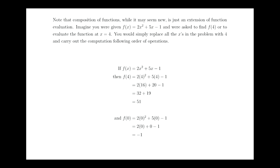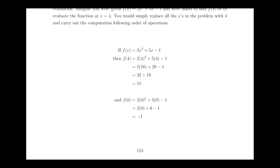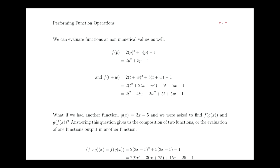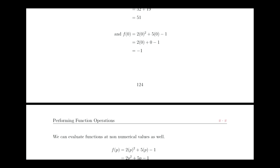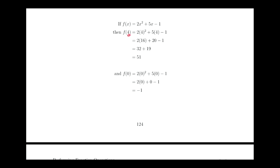And then, here's another example of an evaluation. f of 0 means wherever we see an x, we plug in a 0 into the function, and that cleans up to a negative 1, which means that if we had an input of 0, the output of the function would be negative 1. Now, those two examples were where we were plugging numerical values in, meaning I'm plugging in 0 and I'm plugging in 4, so these are numbers. The idea would be the same with fractions as well, but basically those are numerical values. They're numbers.